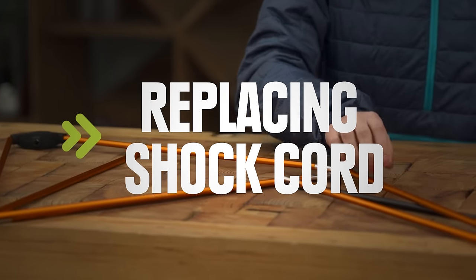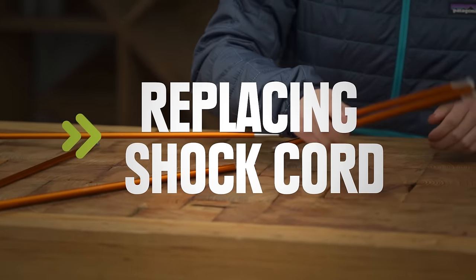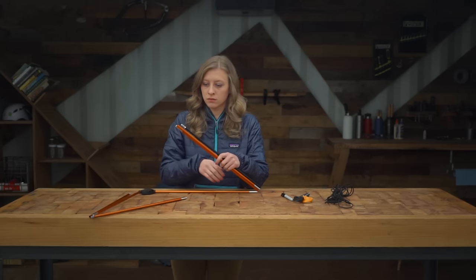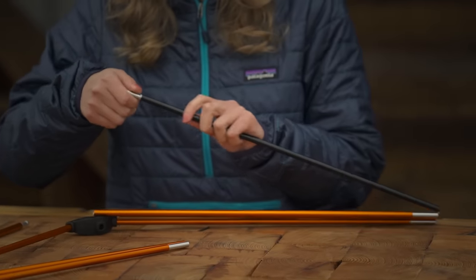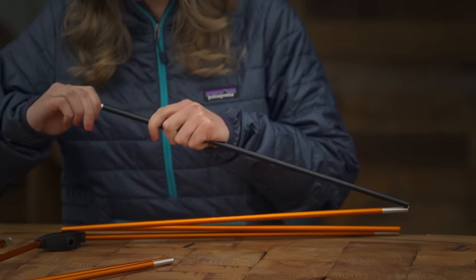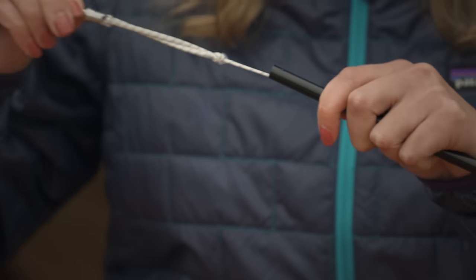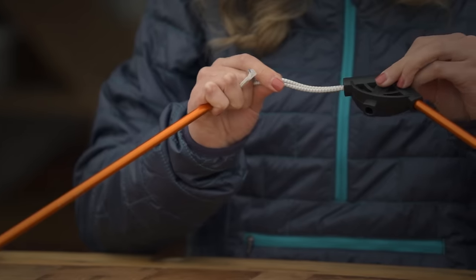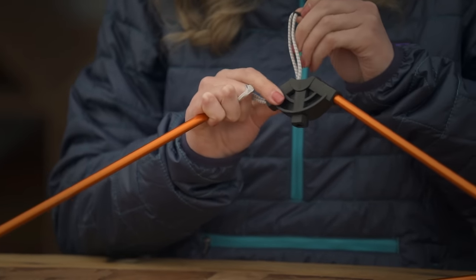If the shock cord in your poles is frayed and broken, or just not stretchy anymore, it's time to replace it. Start by closely inspecting the ends of the poles to see how the cord is connected. Most poles have a removable plastic or metal tab that you'll have to unscrew or pull out so you can undo the cord.